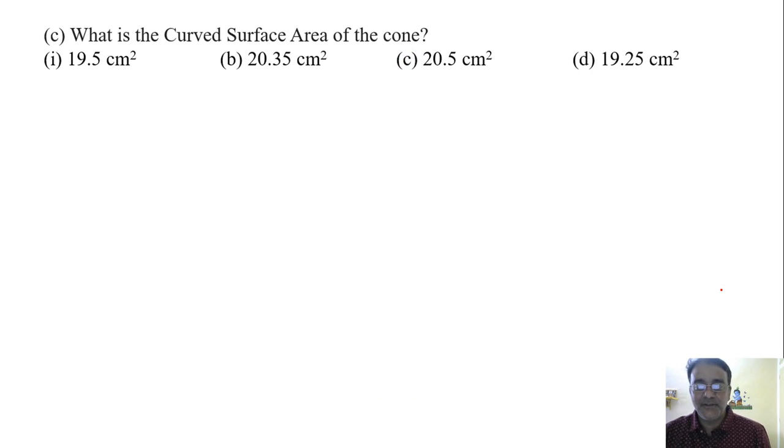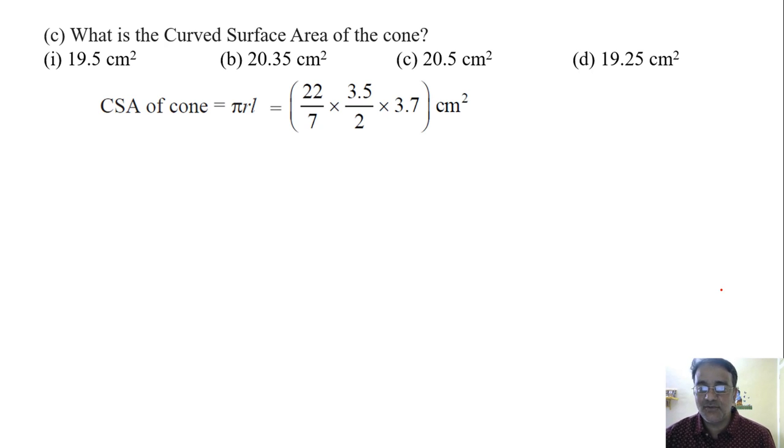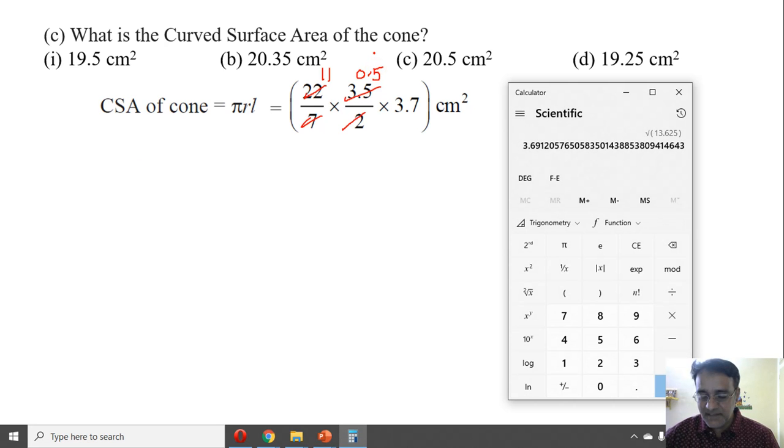Now, what is the curved surface area of the cone? The formula is πrl. The value of π is 22/7, r is 3.5/2, and l is 3.7. We can cancel to get 11 times 0.5 times 3.7, which equals 5.5 into 3.7, giving us 20.35 cm². Option B is the correct answer.